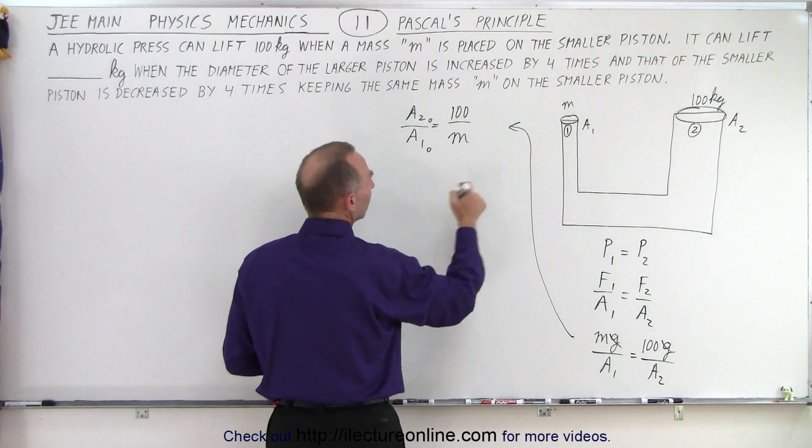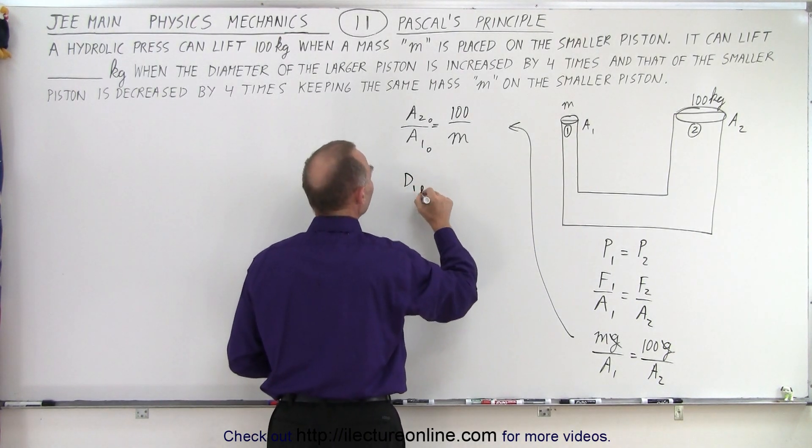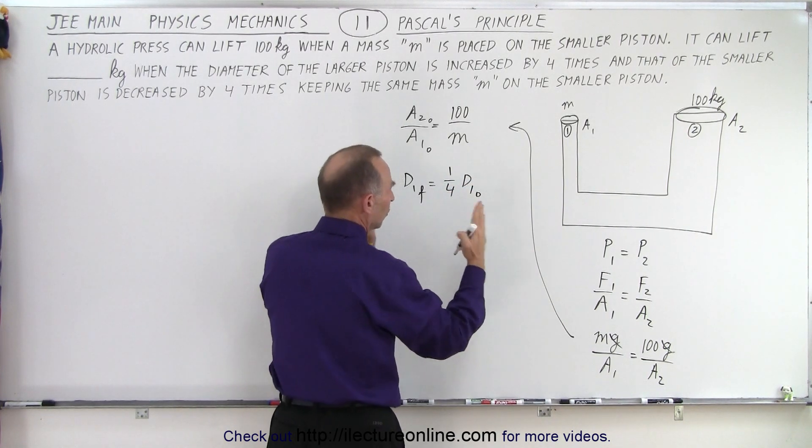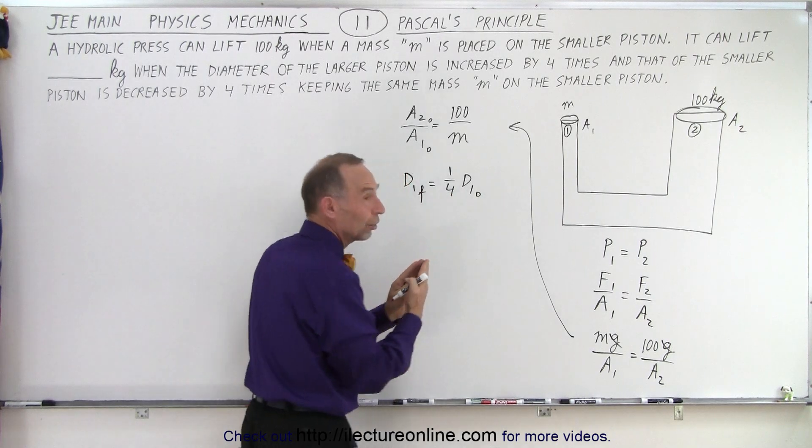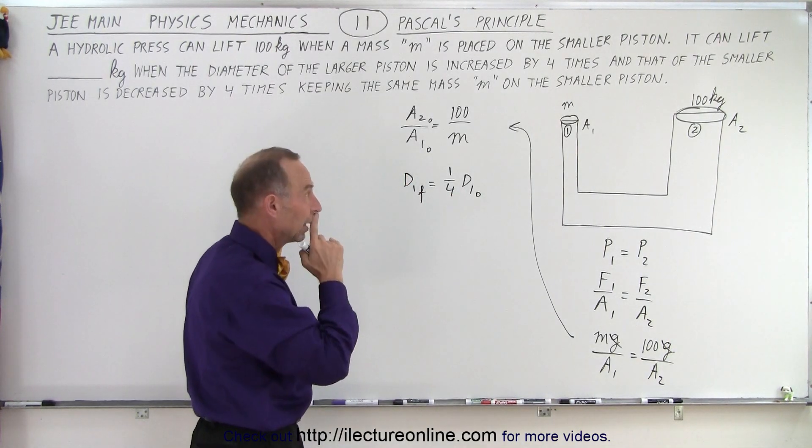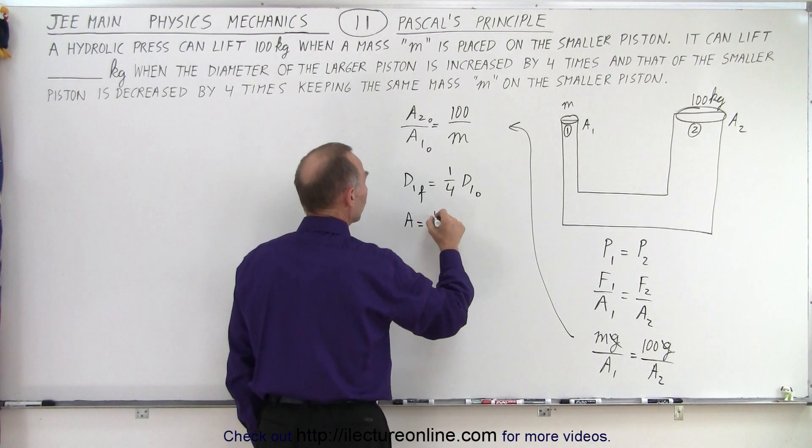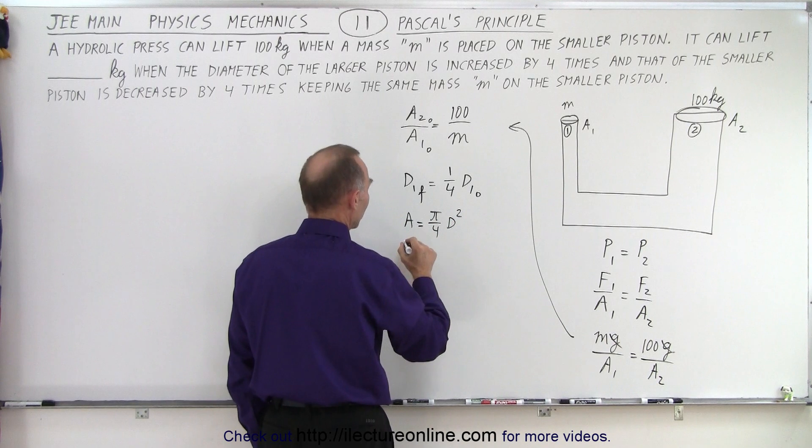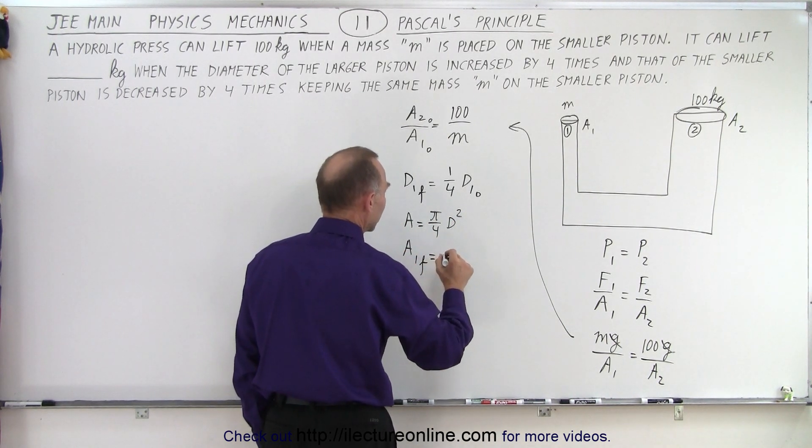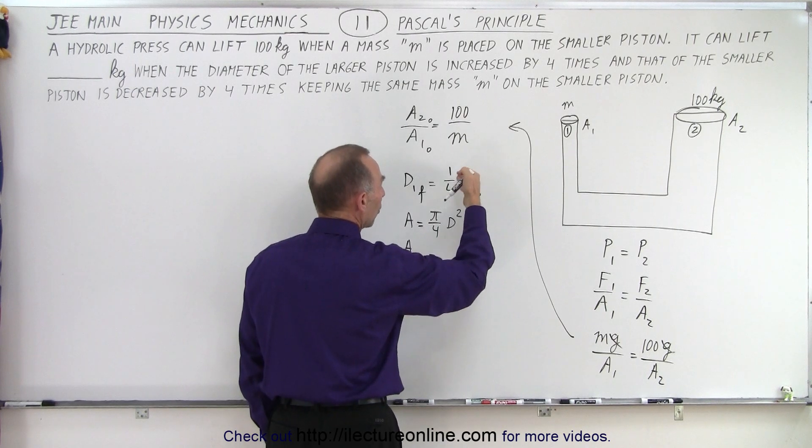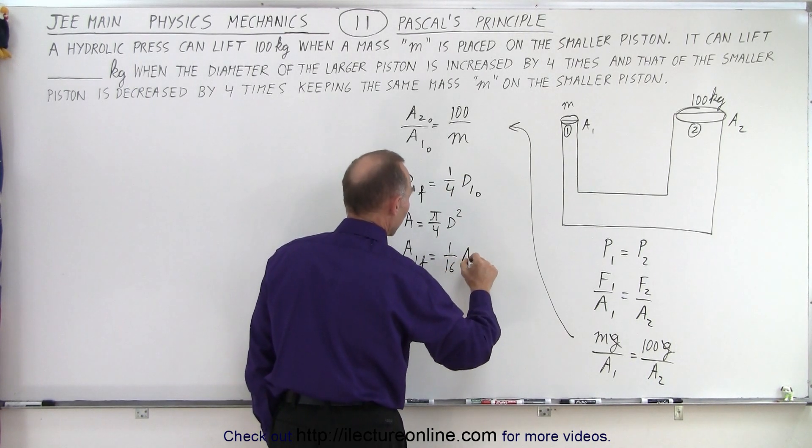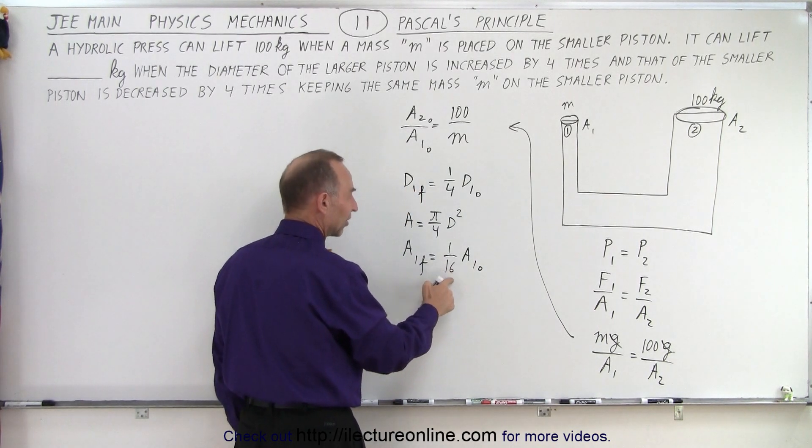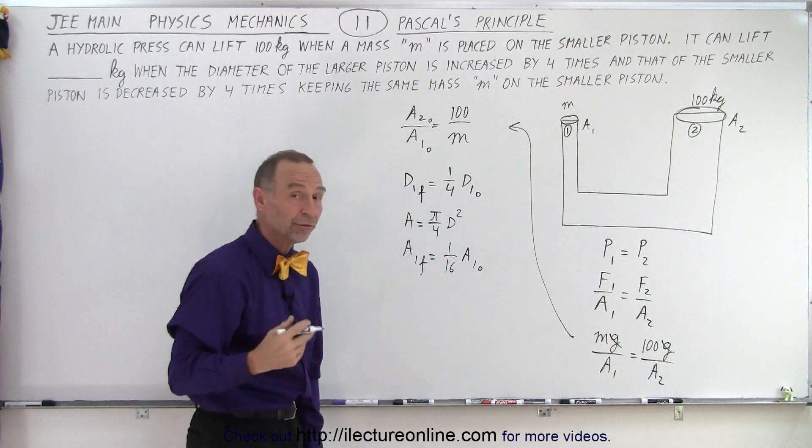So, notice that D1, the diameter here, D1 final equals one quarter D1 initial. So, what we're doing here is we're reducing the size to one quarter the initial diameter. And so, since we know that area is equal to pi over 4 times D squared, what this then means is we can say that area 1 final is therefore equal to this number squared. So, it would be one sixteenth area 1 initial. So, we actually reduce the area by a factor of 16 by reducing the diameter by a factor of 4.